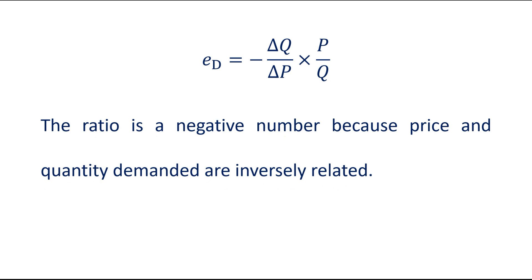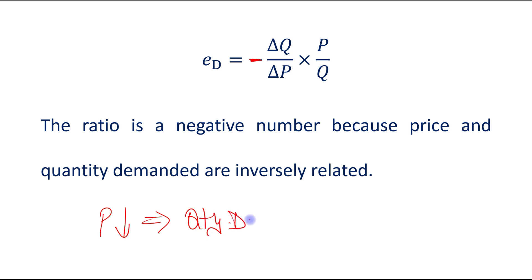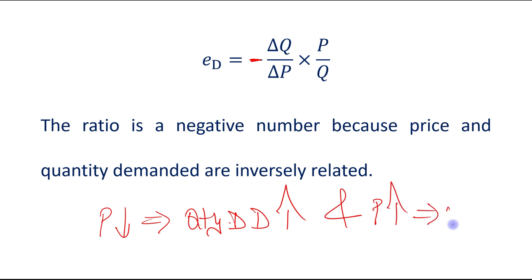The ratio is a negative number because price and quantity demanded are inversely related. You can see that there is a minus sign. This minus sign indicates a negative or an inverse relationship between price and quantity demanded — that if price decreases, then quantity demanded will increase, and if price increases, then quantity demanded will decrease. Thank you.